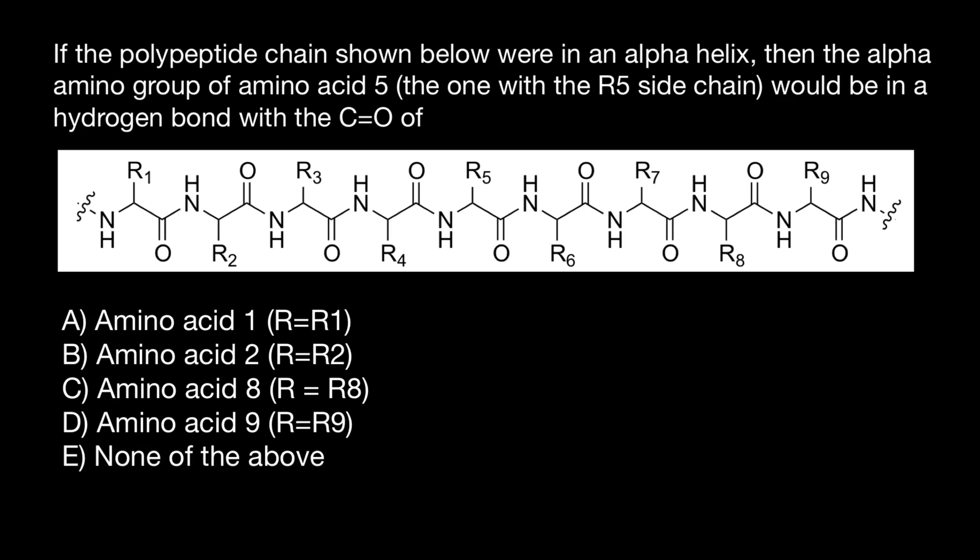Hello and welcome to Nikolai's Genetics Lessons. Today I have prepared a very interesting problem for you. What is interesting about this problem is that it has a trap. Even if you saw my previous videos about alpha helixes, the chances that you are going to choose the correct answer is close to zero. And for those people who would just choose a random answer, the chances are going to be one out of five, or 20%.